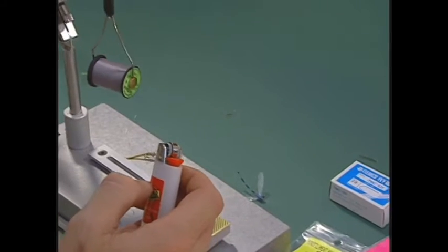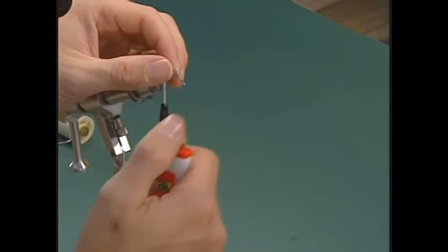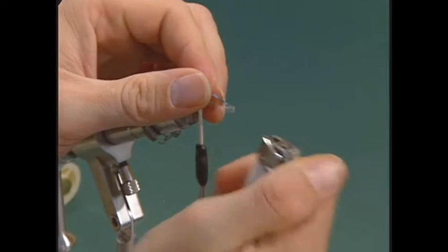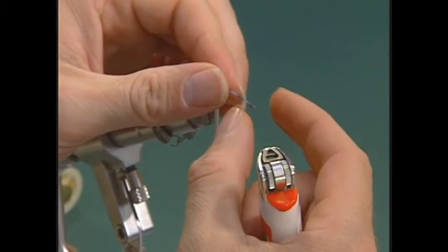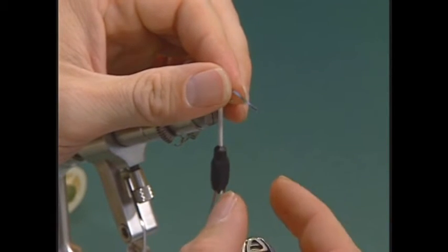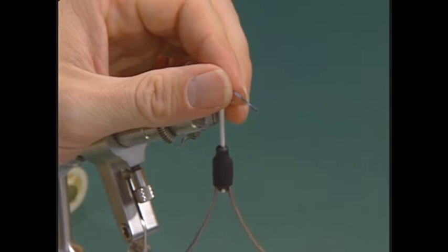I'm going to grab my lighter. I'll just bend the damsel body material over. I'm just going to singe it a little bit, wet my fingers and pinch it. That way it will keep it from coming unraveled.